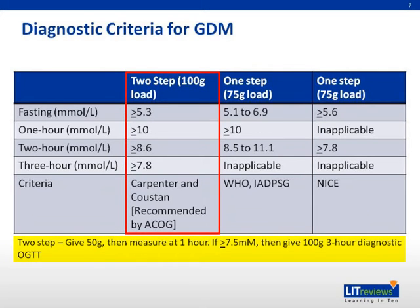ACOG uses a two-step process. First, you give a 50-gram dose of glucose and measure blood glucose at one hour. If it exceeds 7.5 millimolar, you proceed to a 100-gram three-hour diagnostic OGTT. If it is less than 7.5 millimolar, you do not proceed and the patient is not diagnosed with GDM. There are four values: fasting, one-hour, two-hour, and three-hour. In order to be diagnosed with GDM, you must meet at least two of these criteria.